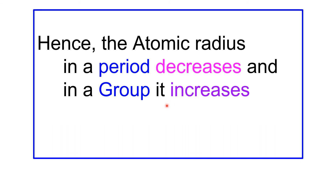To summarize: atomic radius decreases in a period and increases in a group. With this, I conclude today's session. In the next class, you will learn about electronegativity and electropositivity — how they change in a period and in a group. Please review this video again and note down the important points. Stay home, stay safe.